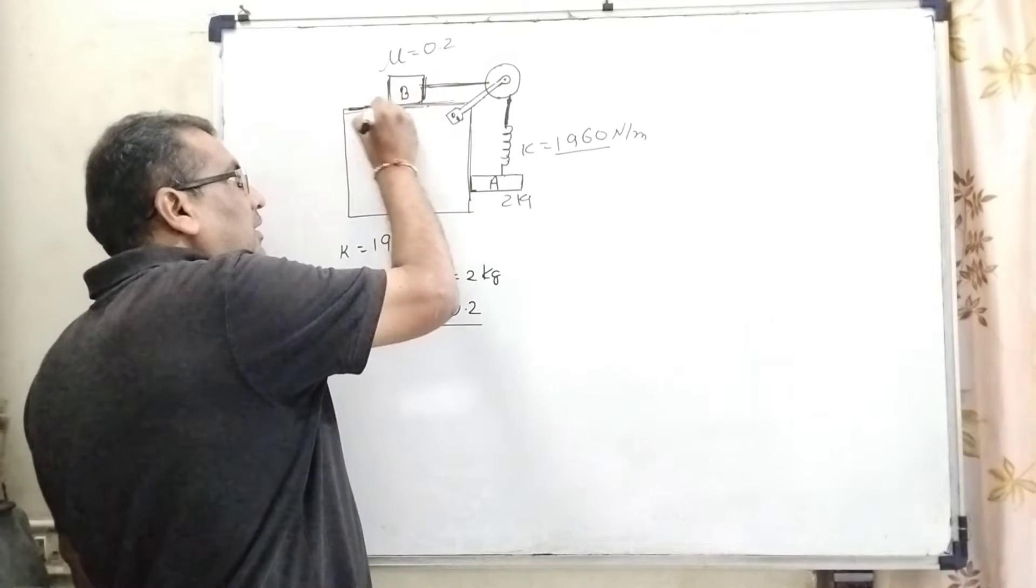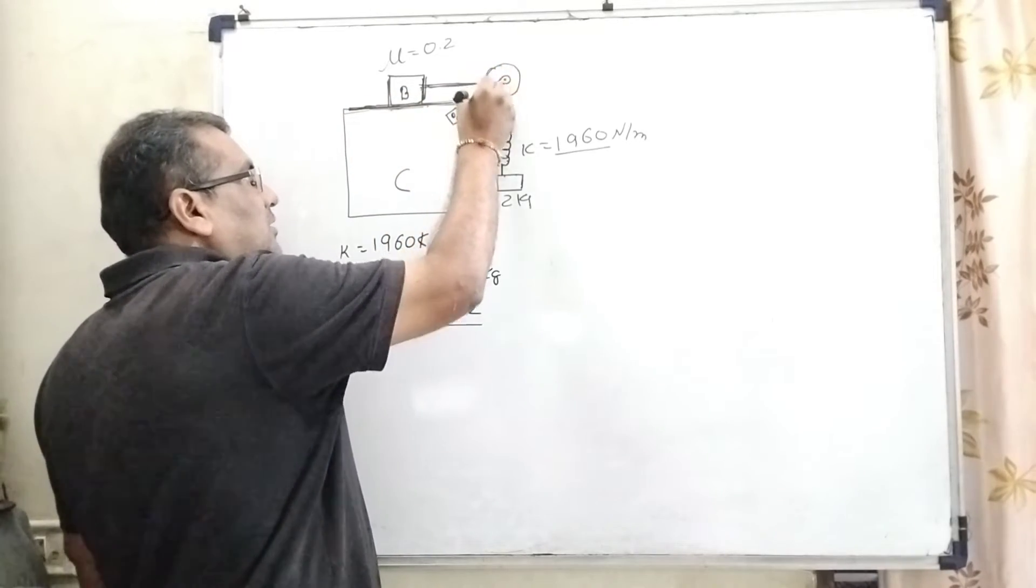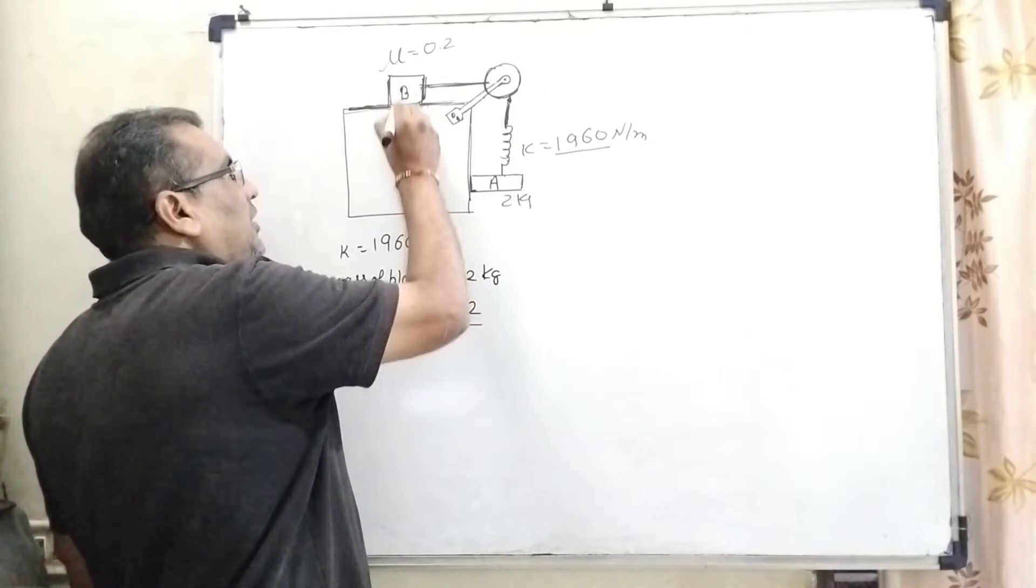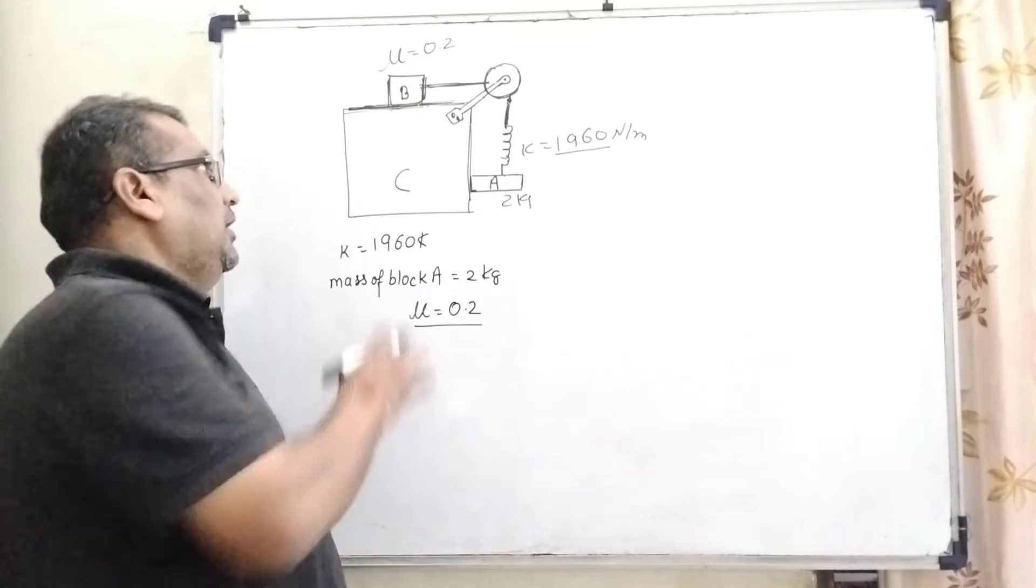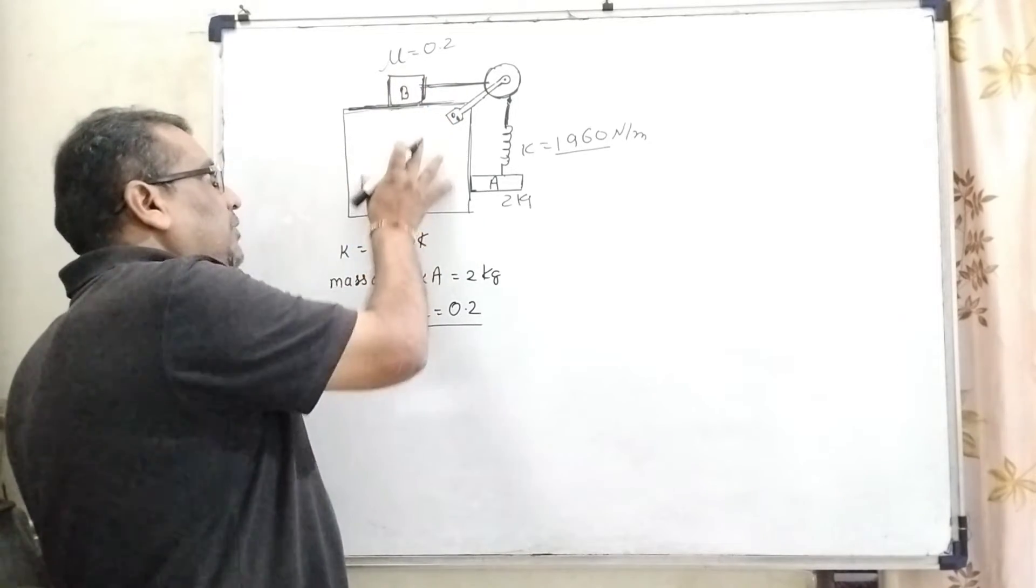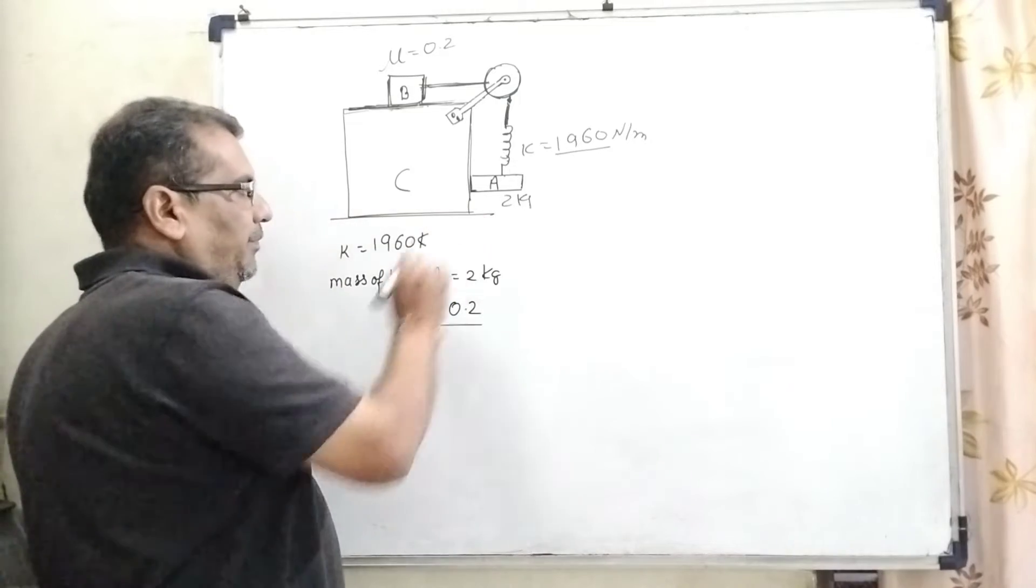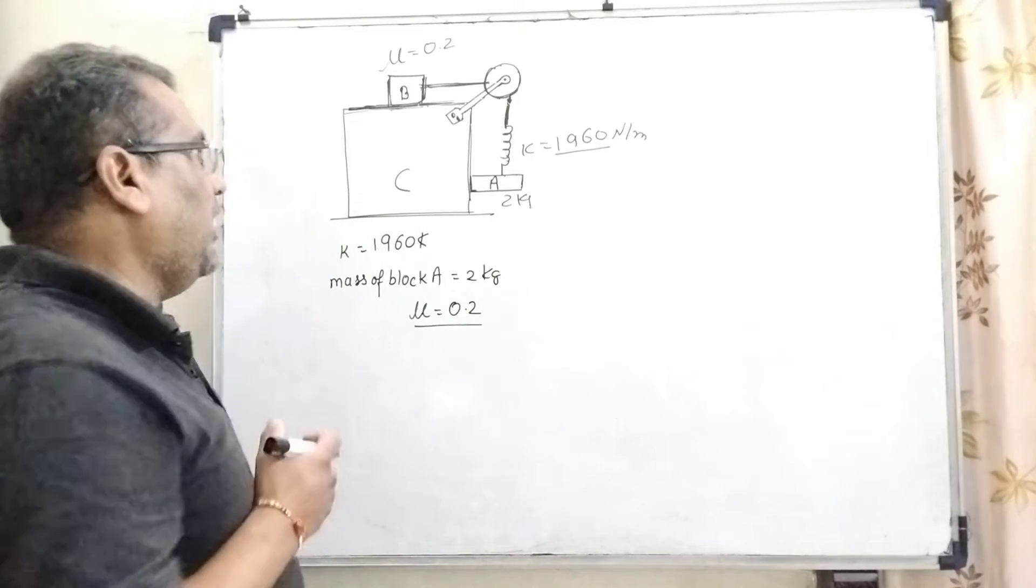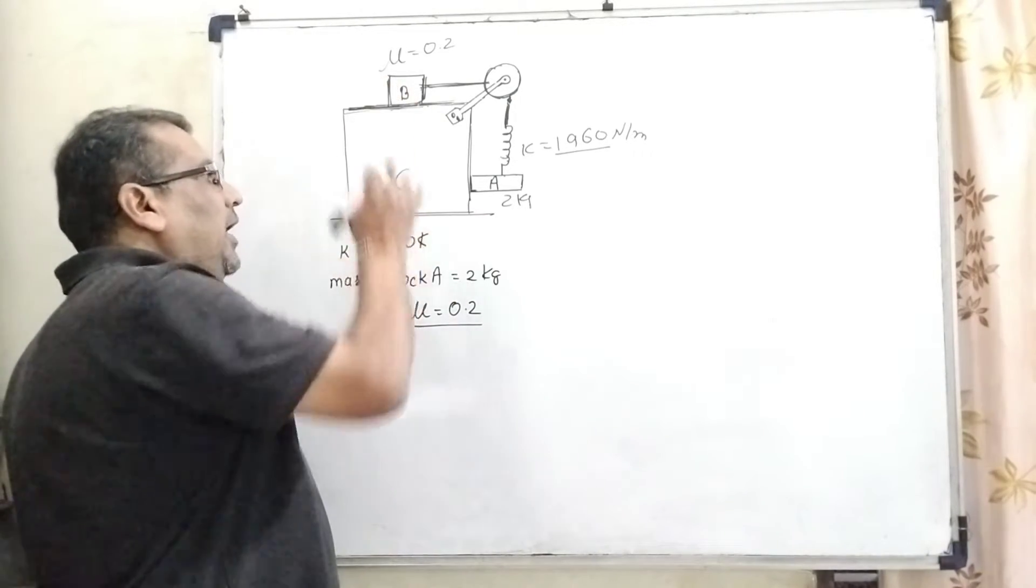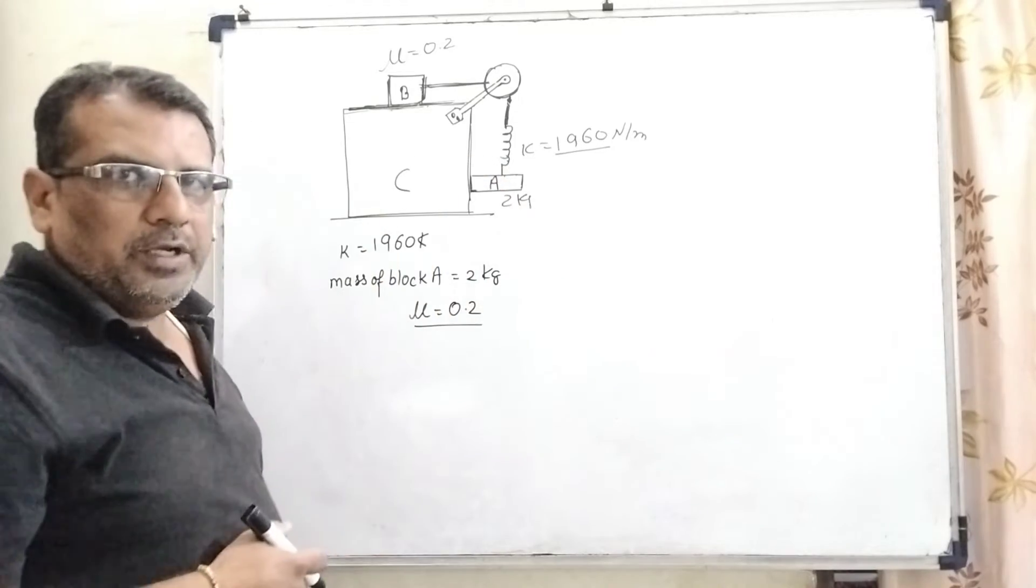And this block B is moving towards the pulley with friction coefficient mu equal to 0.2. And this whole system is kept on the C block that is stationary. And we have to find out the mass of B and energy stored in this system.